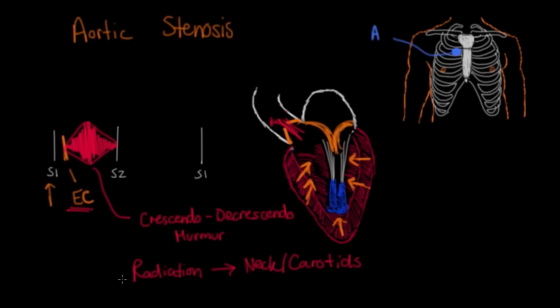Pulmonic stenosis is really just the same thing as aortic stenosis but on the right side of the heart. It's virtually the same murmur — a systolic ejection murmur, crescendo-decrescendo, and you can have an ejection click — but this one is not going to radiate to the neck or the carotids. Instead of being heard in the aortic area, it's normally heard in the pulmonic area.